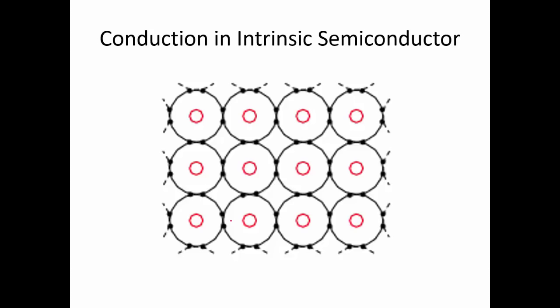However, when you add thermal energy or energy of some kind, what happens is one or several of these electrons are going to get enough energy to be moved out of the valence shell and into the conduction band. So let's say there's enough energy for this electron to move into the conduction band — we've got an electron that's now a free electron because of the thermal energy, and that's going to contribute to conduction in the intrinsic semiconductor.